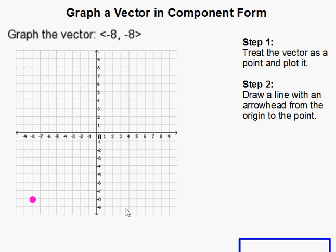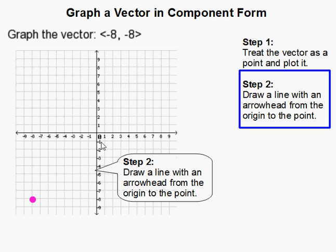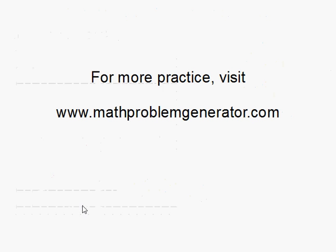And then the next step, super easy, you just draw a line with an arrowhead from the origin to the point. Like so. And then you can get rid of the dot so it looks prettier. And that's it. It's very simple. That completes our problem.